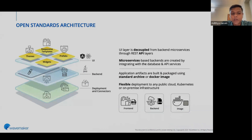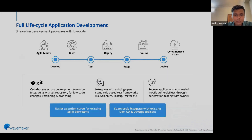Here's a quick snapshot of what the architecture would look like for a standard application. The UI comprises prefabs, widgets, templates, and themes. The backend is your Java APIs and databases. The deployment layer is where you can literally deploy your application anywhere — it could be on a private cloud, public cloud, or an orchestration layer of choice like Kubernetes or Red Hat OpenShift — making it truly end-to-end in terms of application deployment.